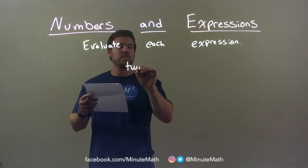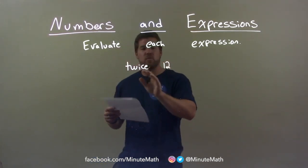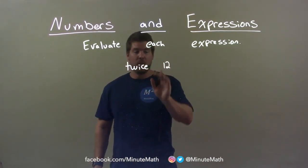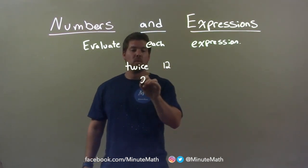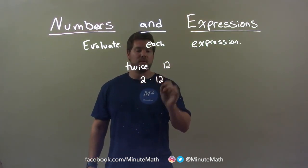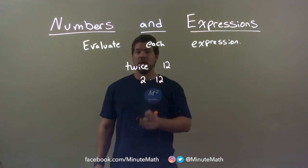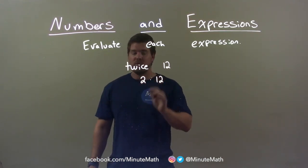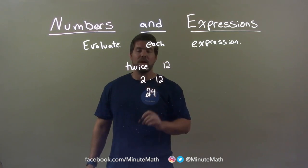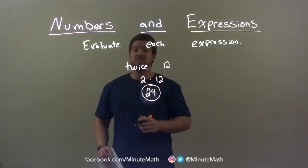2 times 12. So I have twice 12. When I have twice something, that's going to be 2 times that. So we have 2 times 12. Now we have to evaluate: 2 times 12 is just 24. Our final answer is just 24.